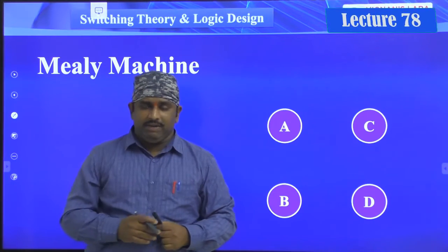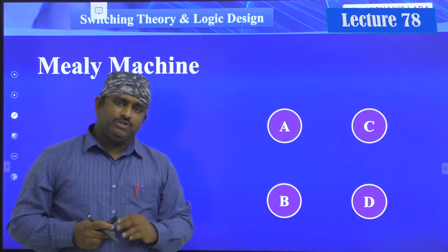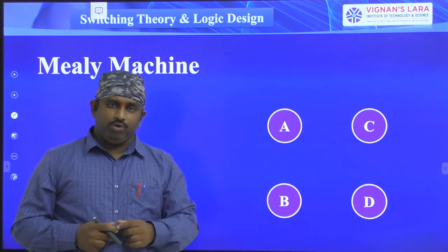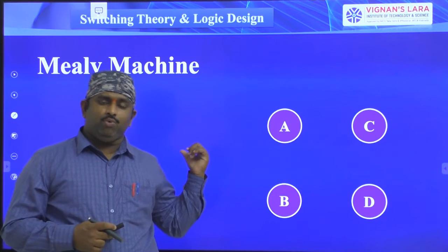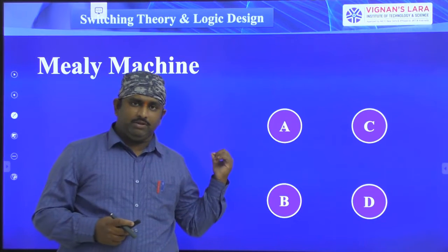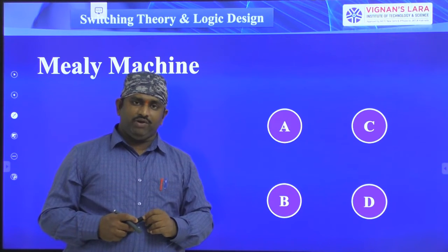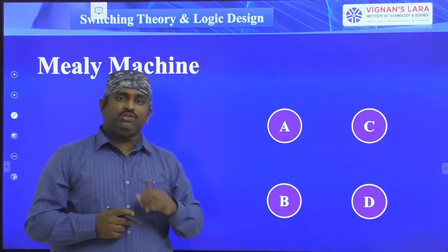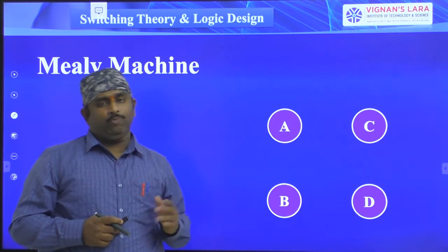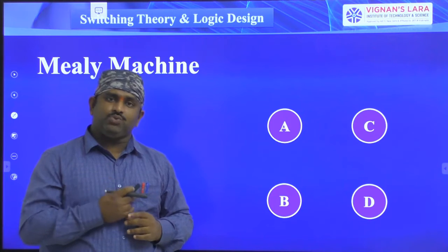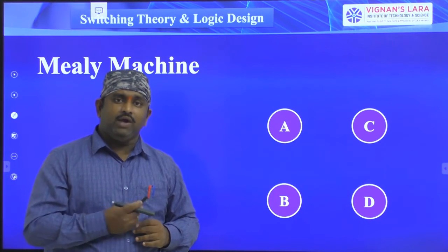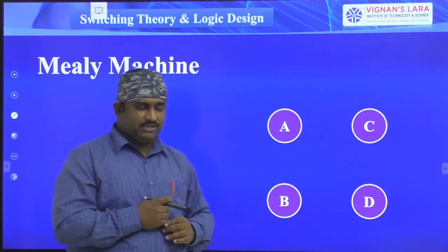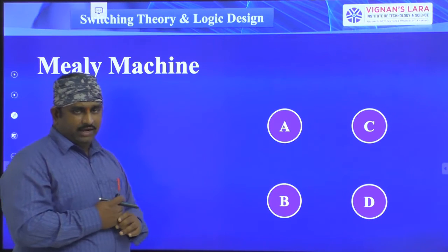The next concept we will see is the Mealy machine. Finite state machines are divided into two categories: the first one is the Mealy machine, and the second one is the Moore machine. We have seen the definition of the Mealy machine, where the output is defined with inputs as: s(t+1) = f(s(t), x(t)). This we have already seen previously.